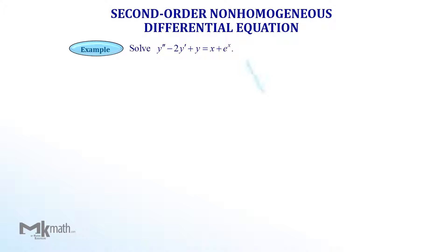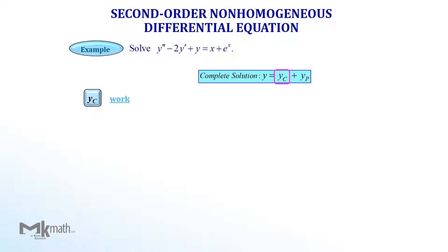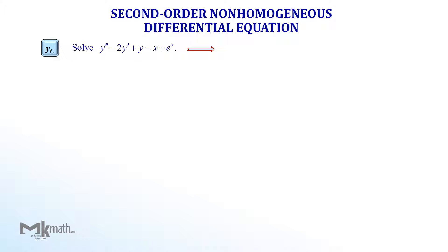Since the complete solution to the equation has two parts, Yc and Yp, let's start with the first part, Yc. First, we need to create a homogeneous differential equation from the original equation. Since this must be homogeneous, we just make the left side of the equation equal to 0.